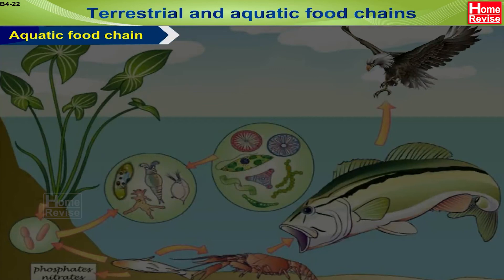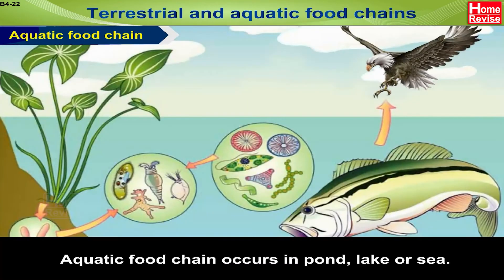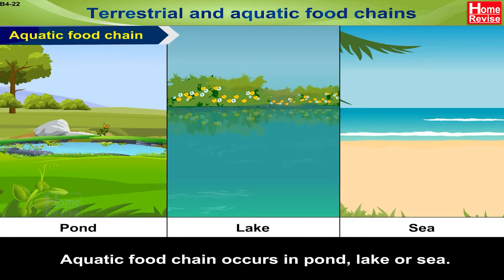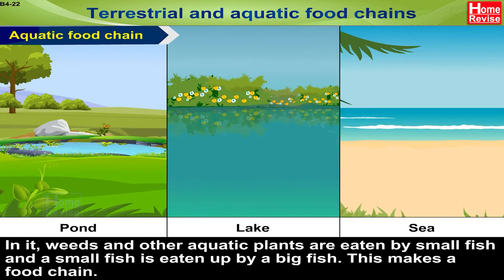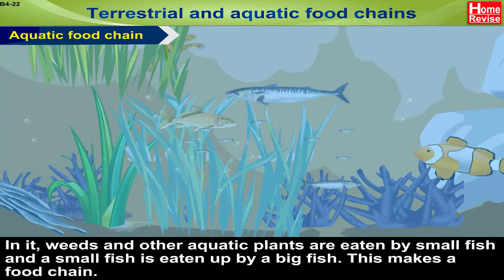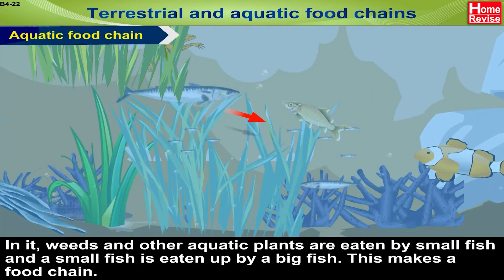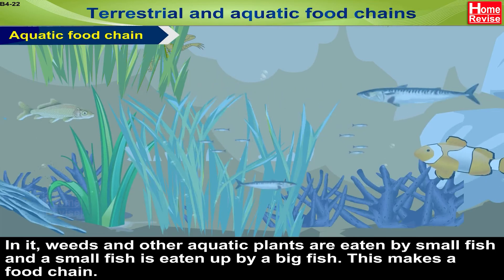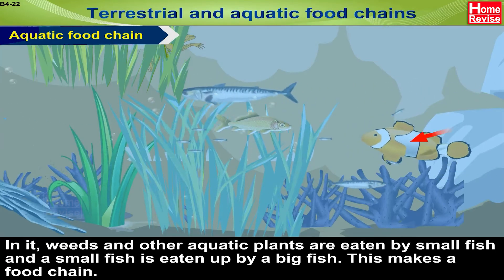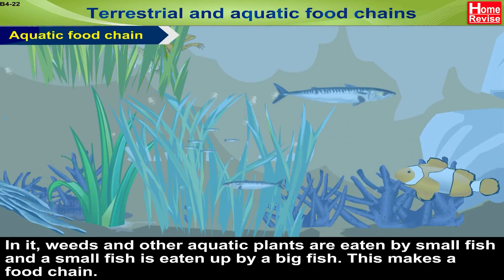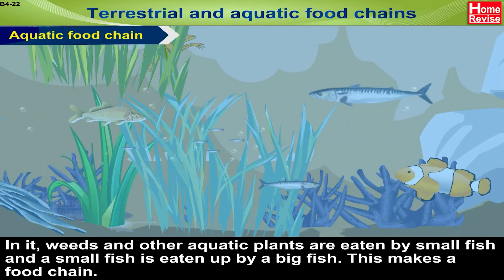Aquatic Food Chain. An aquatic food chain occurs in a pond, lake or sea. In it, weeds and other aquatic plants are eaten by small fish, and a small fish is eaten by a big fish. This makes a food chain.